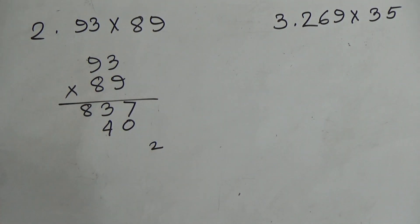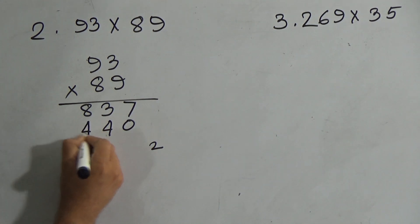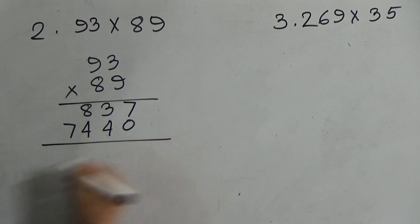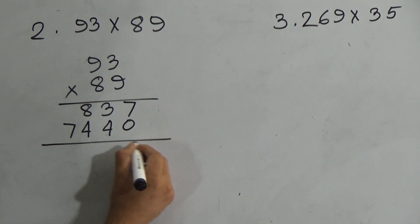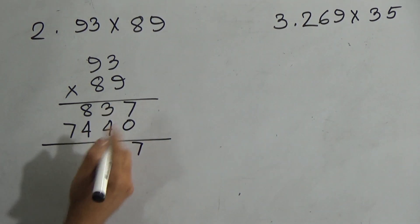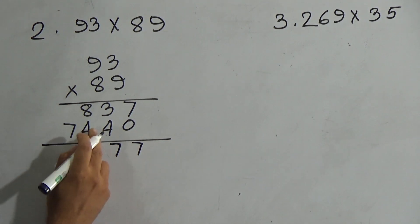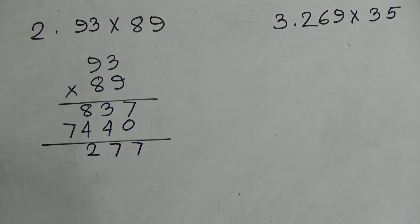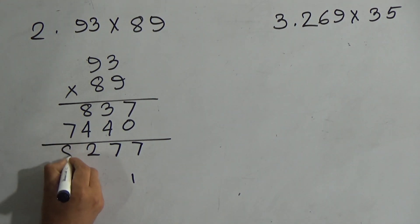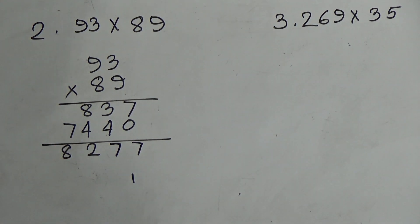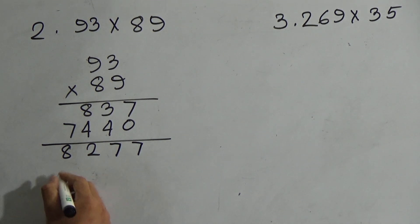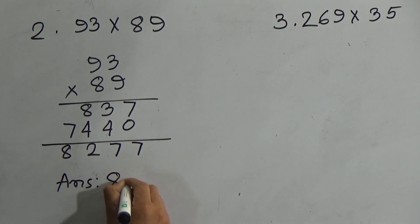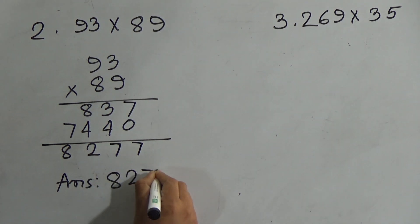Eight nines are 72, and 72 plus two is 74. Now add these numbers: seven, zero; seven, four and three is seven; four and eight is 12, there is a carry of one; one and seven is eight. So the answer is eight thousand two hundred seventy-seven.